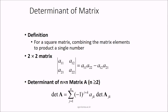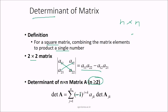The determinant is defined only for a square (n×n) matrix and yields a single number by combining matrix elements into a product. For a 2×2 matrix: det = a11·a22 − a21·a12. For an n×n matrix (n ≥ 2): det = Σ (−1)^(j+k) · ajk · det(submatrix excluding row j, column k), expanding recursively.